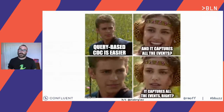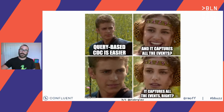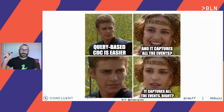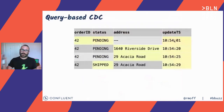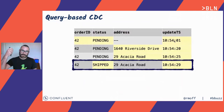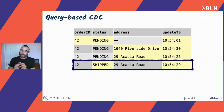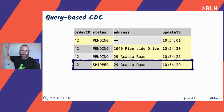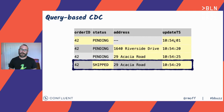Query-based CDC is easier to run — you just need credentials and connection details for the database. We can capture the state of the table at the point we poll it. But what we cannot guarantee is capturing every single event. What actually happened during that polling interval were four different events: order created, address changed, address changed again, and order shipped. Those four events matter because different microservices may care about each one — the fraud-checking service needs to know when the address gets changed, the fulfillment service needs to know when it's being shipped. Events model the world around us, so capturing individual events is often super important.